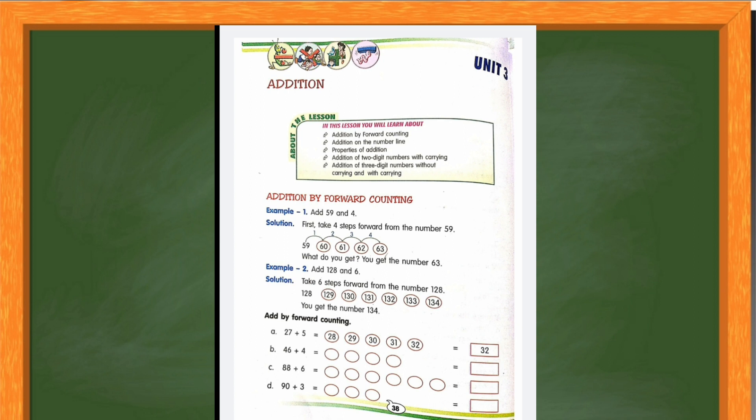Now in question number A you have 27 plus 5. So you will have to add 27 plus 5 and then you have to write the answer. See, it is already done in the book. So similarly you have to do question number B, C and D.